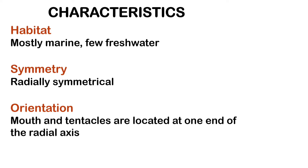The members of phylum Cnidaria are mostly marine animals, but a few species live in freshwater too. They are radially symmetrical animals. For better understanding of radial symmetry, you can check my video related to symmetry.